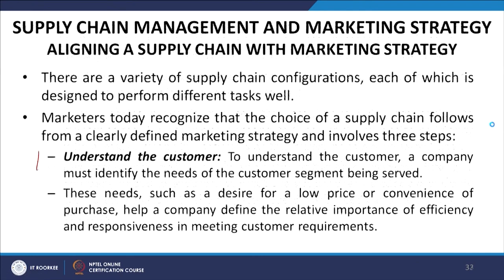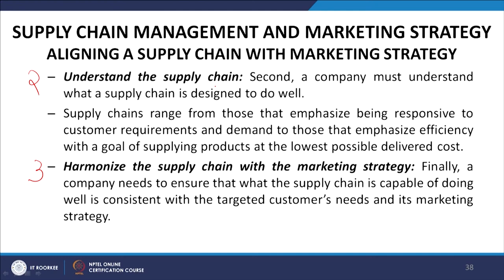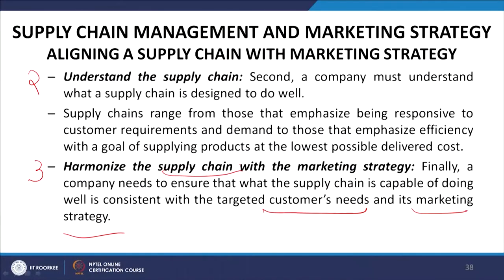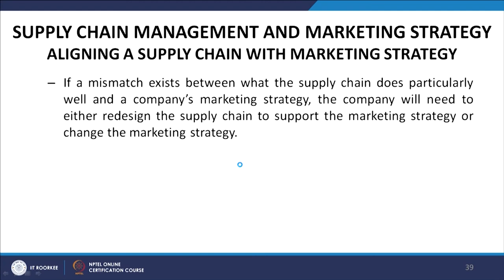The third step is to harmonize the supply chain with the marketing strategy — a company needs to ensure that what the supply chain is capable of doing well is consistent with the target customer's needs and its marketing strategy. If a mismatch exists between what the supply chain does particularly well and the company's marketing strategy, the company will need to either redesign the supply chain to support the marketing strategy or change the marketing strategy to support the supply chain.